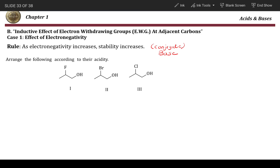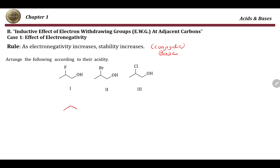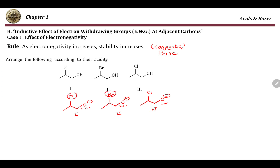For example, if we were asked to arrange the following compounds according to their acidity, according to the solving strategy we learned before, we have to draw the conjugate bases in each case by removing the hydrogen and replacing it with a negative charge. We end up with anions all at the same element — oxygen — in all cases. The main difference between compounds one, two, and three is that compound one has fluorine next to the negative charge, two has bromine, and three has chlorine.